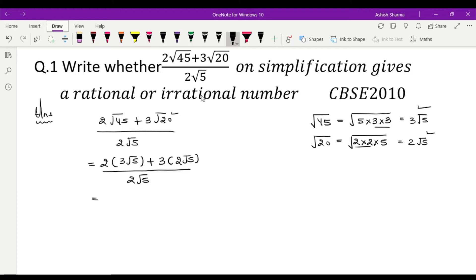So it will be 2, 3's are 6, 6 root 5 plus 3, 2's are 6 root 5 upon 2 root 5. Theek hai, 6 root 5 plus 6 root 5, jaise 6x plus 6x agar hum likhte hain to yeh 12x ban jata hai. To 6 root 5 plus 6 root 5, yeh 12 root 5 banne wala hai aapka upon 2 root 5.